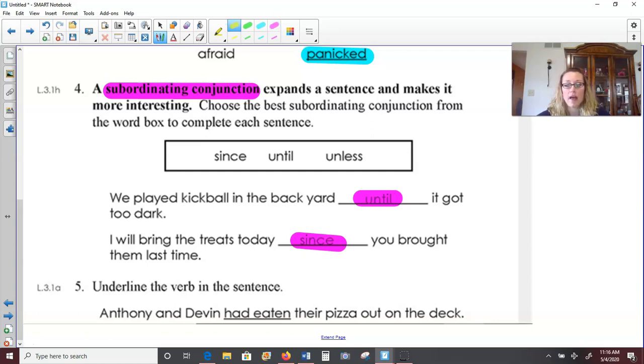And number five, underline the verb in the sentence. That's the action. Anthony and Devin had eaten their pizza out on the deck. What did Anthony and Devin do? They had eaten their pizza. Had eaten is using a helping verb. We could have said Anthony and Devin ate their pizza on the deck. But had eaten also works as the verb. You just have to use the helping verb, had.